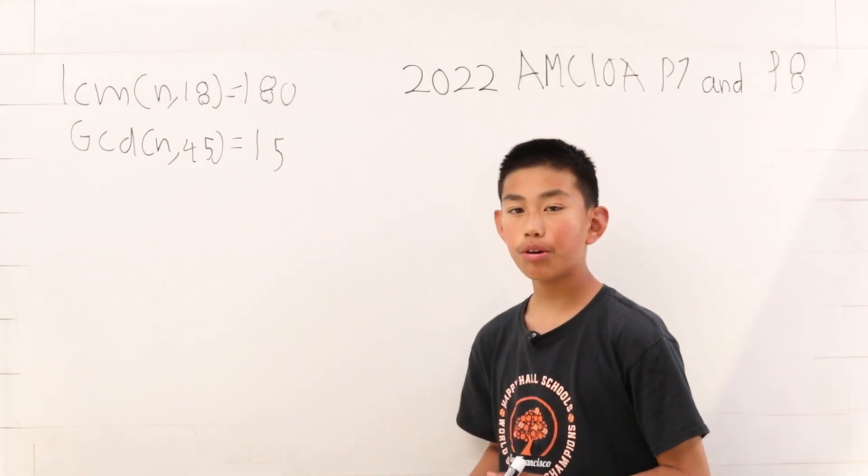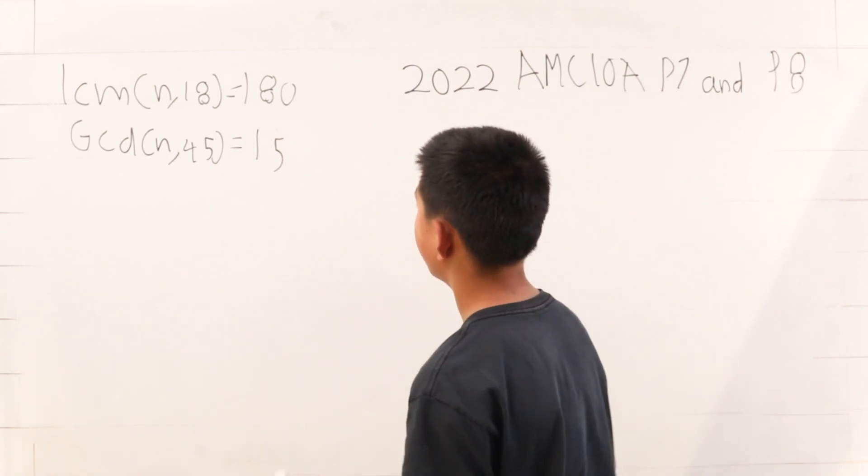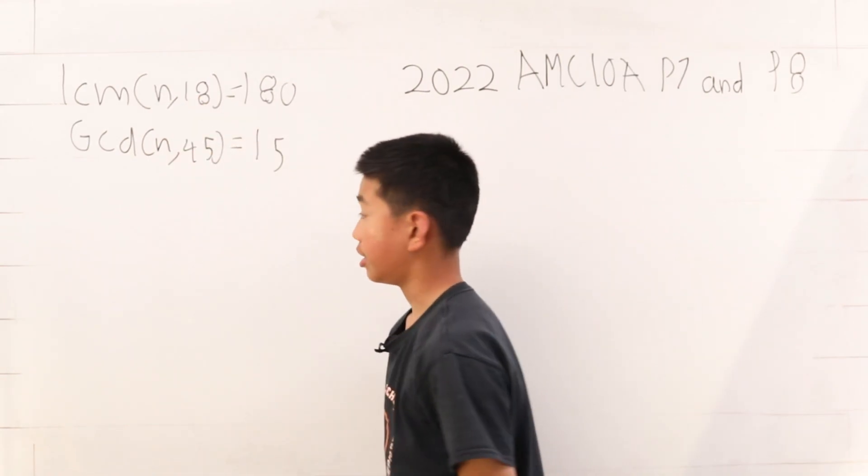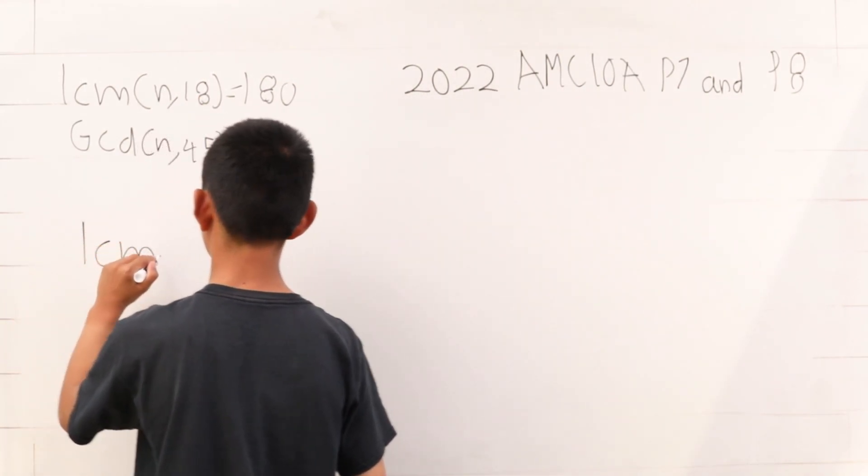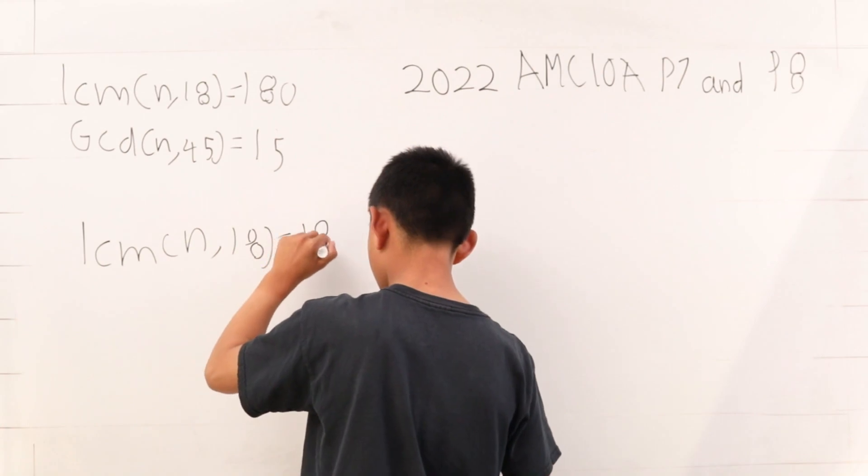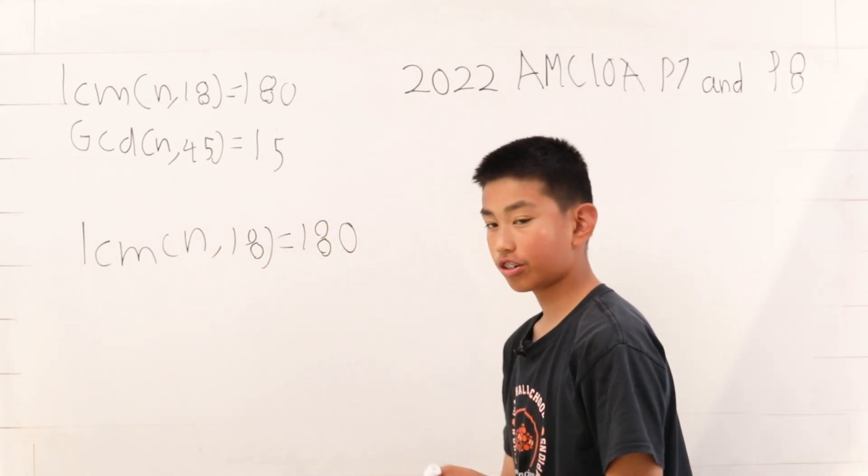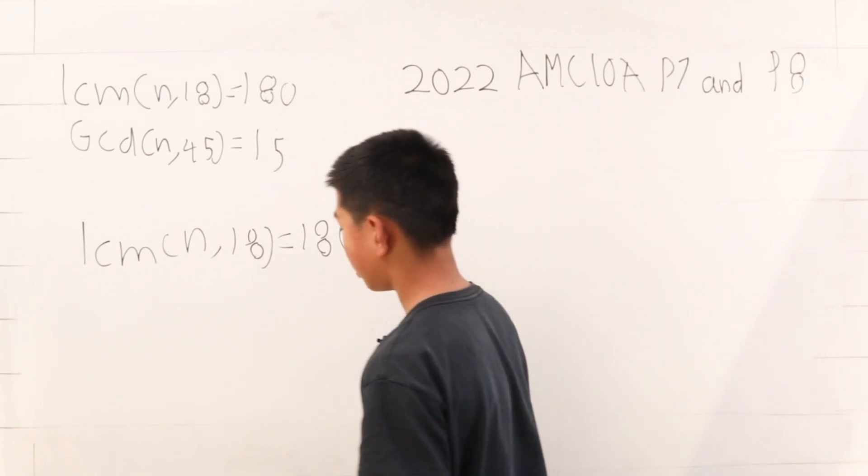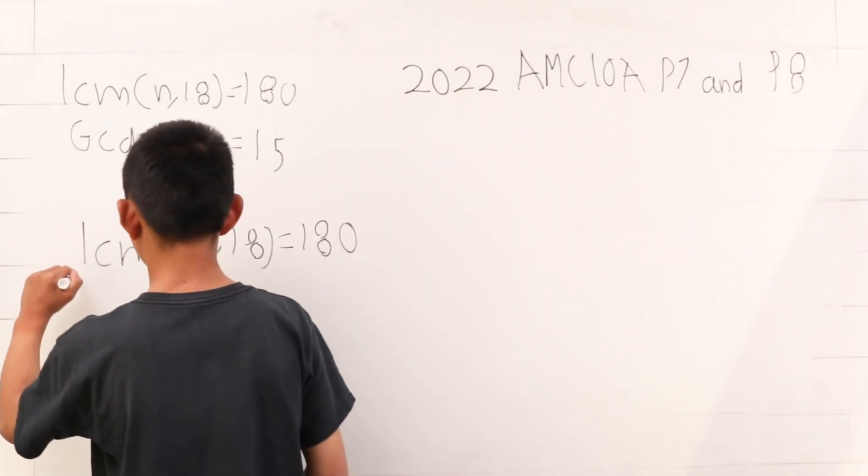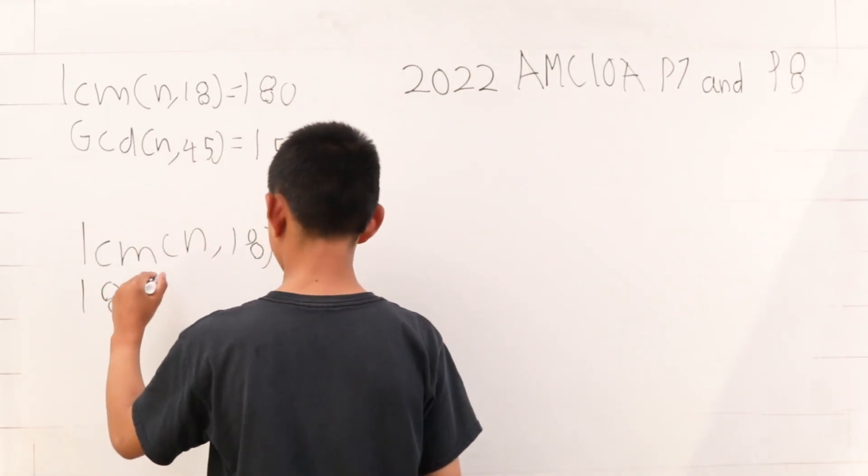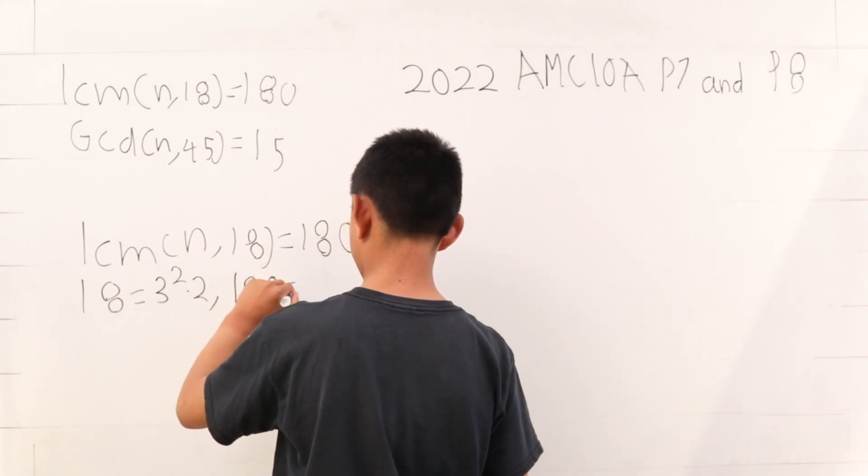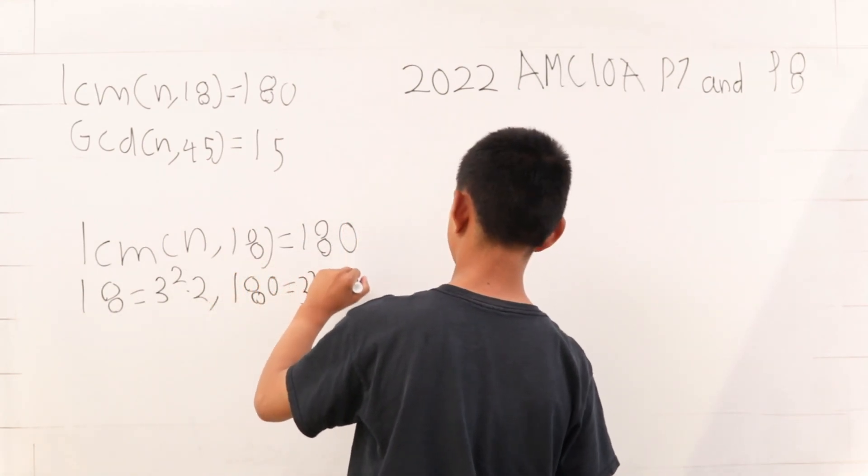Clearly, we want to find what n is and then add all the digits up. Let's take this first thing we were given into consideration. The least common multiple of n and 18 is 180. To make this easier for finding the values of n, we use prime factorization. 18 is 3 squared times 2, and 180 is 3 squared times 2 squared times 5.